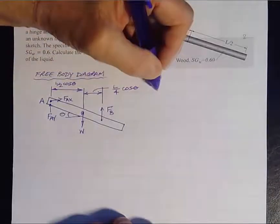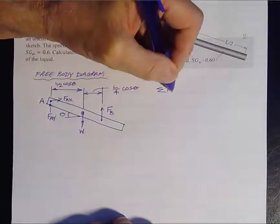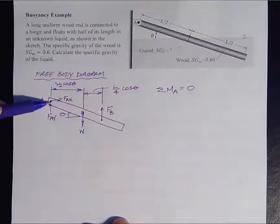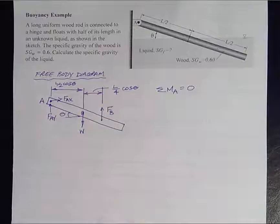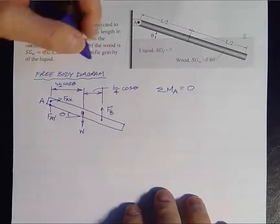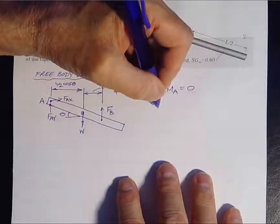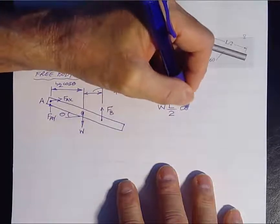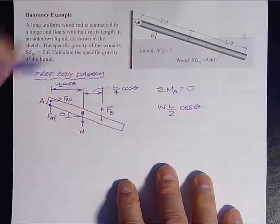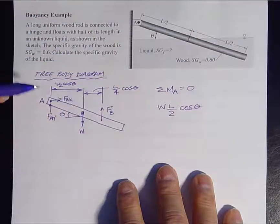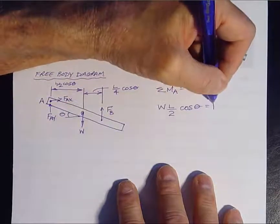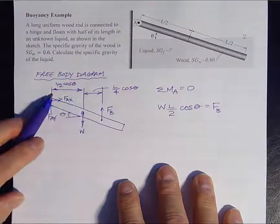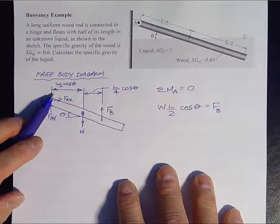So what we do is we take sum of the moments about the hinge equal to zero. We take the moments around the hinge so that we don't have to calculate the hinge forces, and so we would have that W L upon 2 cos theta, so that's the weight times the moment arm, has got to equal the buoyancy force times its moment arm, which you can see is 3 quarters L cos theta.